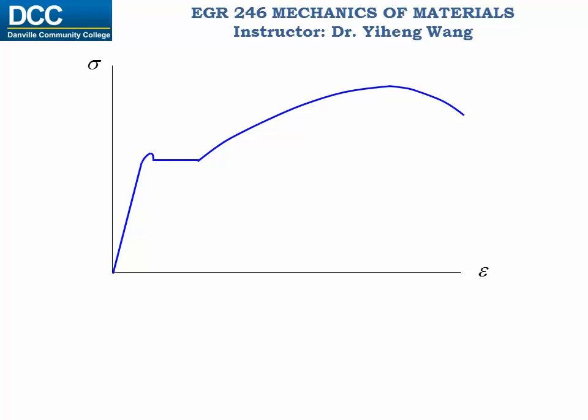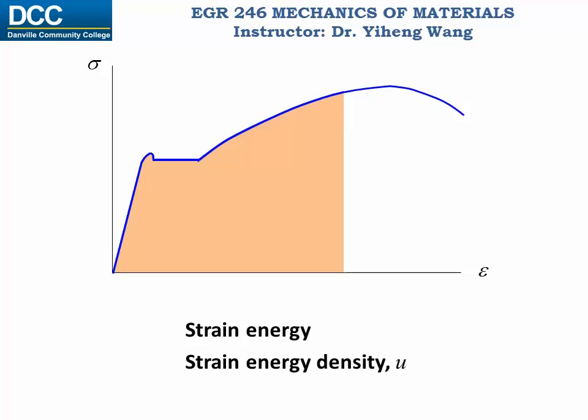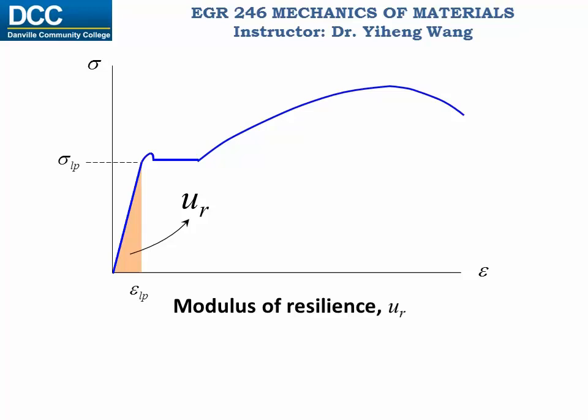During deformation, the material will absorb energy and store it internally through its volume. This energy is called strain energy, and strain energy per unit volume is called strain energy density, denoted by U. Mathematically, the strain energy density at any given point equals the integration of the stress-strain diagram, or the area under the curve. Of special significance is the modulus of resilience, which is the strain energy density at the proportional limit. It equals the area of the triangle, which equals one-half times sigma PL times epsilon PL. The modulus of resilience describes how much energy the material can absorb without any permanent deformation.